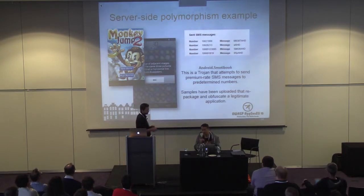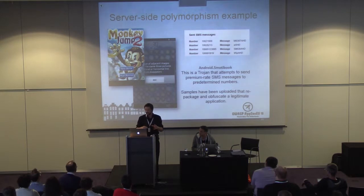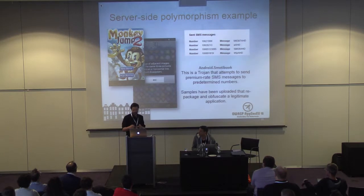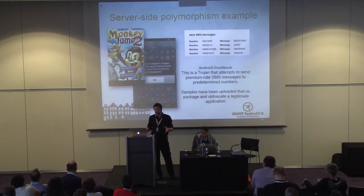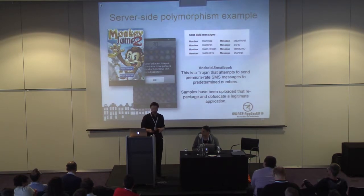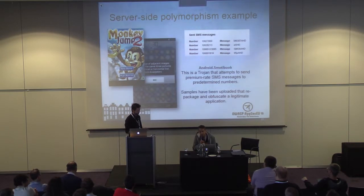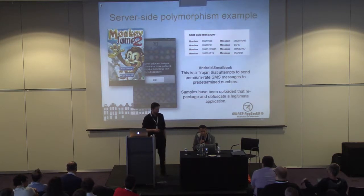Monkey Jump is the first app we found with server-side polymorphism, and it was one of the very first malicious apps uploaded to APK Scan. The malware runs in the background sending texts to premium numbers. We took that one malware sample and went back to our full bucket of applications to find how many others had the same piece of malware — we found many more, all encoded differently but all doing the same thing. It's a fully functional, Trojanized game taken from the App Store, so people leave it on their phone while those text messages are being sent.